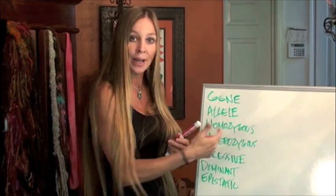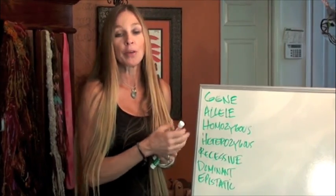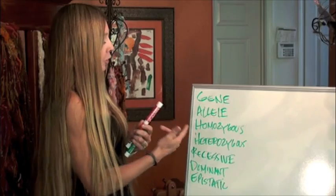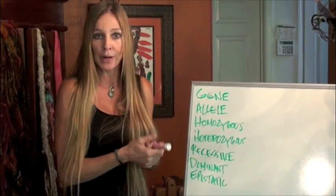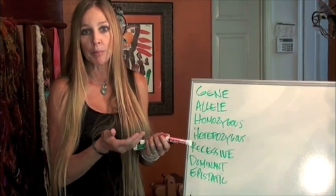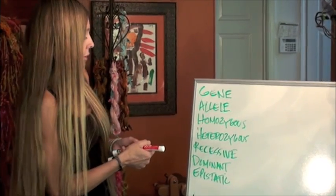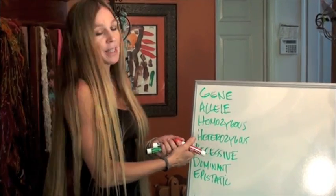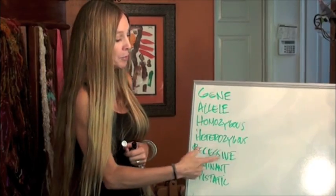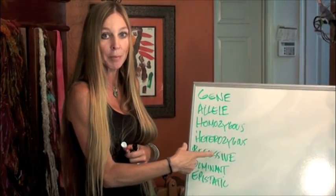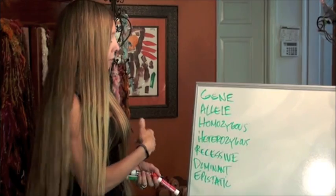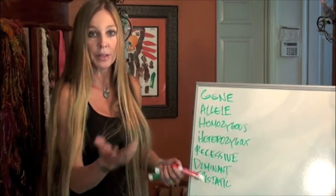A homozygote or homozygous means that you have two copies of the same allele, like blue-blue or brown-brown. Conversely, a heterozygote or heterozygous means you have different copies, like brown-blue. Recessives have to have both copies of the gene — they need to be homozygous for it to be expressed phenotypically, for you to be able to see the way that the gene looks.